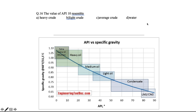Different API values give different specific gravities — API is inversely proportional to specific gravity. Specific gravity is the ratio of the density of a substance to a reference liquid (water). If specific gravity is 4, the substance is 4 times denser than water. Higher specific gravity gives lower API. Heavy crude corresponds to an API of around 10.